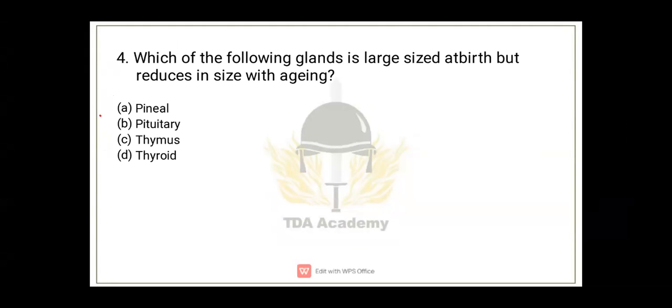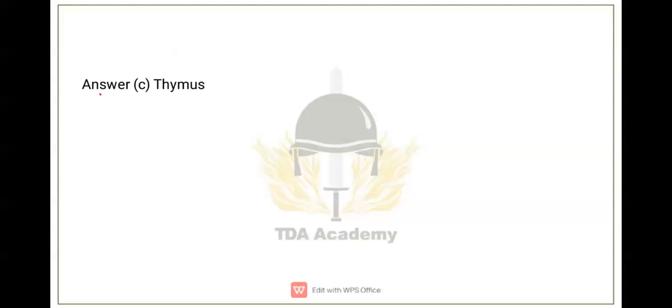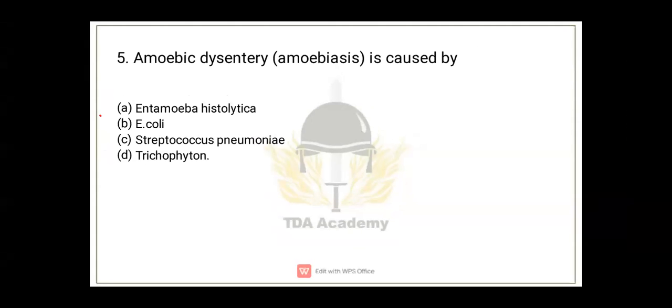With aging, the size reduces. Immunity effect is most important, so in older persons immunity is weak—this is one factor. The correct option is option C, thymus. Next move, question number 5.